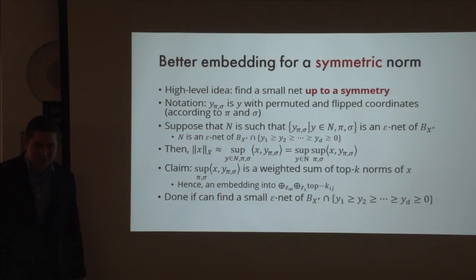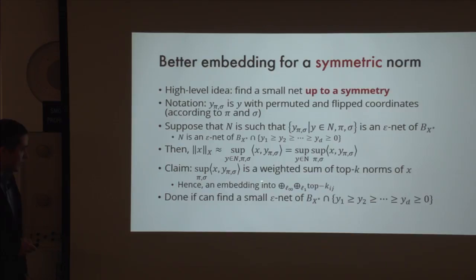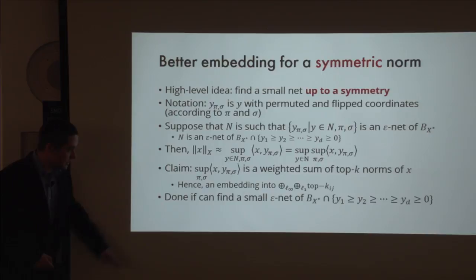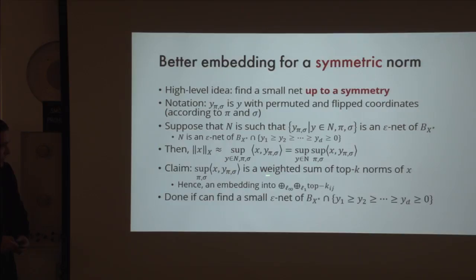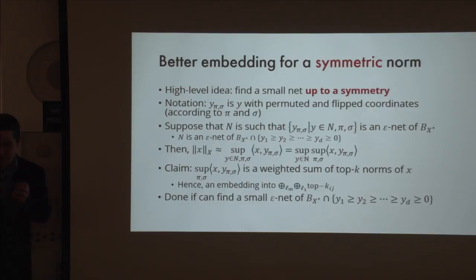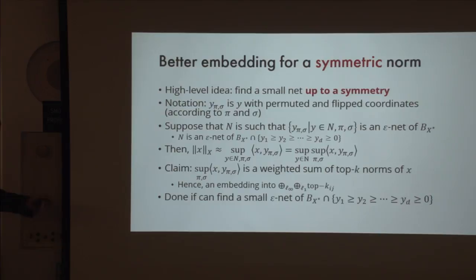So if we construct a small net of this object, we get an embedding: norm of x is the maximum over all such Ys of a weighted L_1 sum of top-K norms. The remaining step is to construct an epsilon-net of the dual unit ball intersected with that cone, of polynomial size. Volume bound fails here—it doesn't work. But we have a simple explicit construction. You take a vector from the unit ball with non-increasing coordinates, zero out small coordinates (which doesn't affect the norm much), then round coordinates to powers of 1+epsilon (also doesn't affect the norm much). This leaves around log D scales, and since the vector is sorted, only the cardinality of each scale matters—giving at most D^{log D} possible vectors.